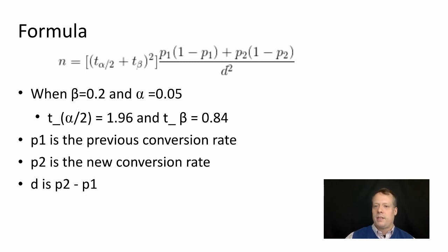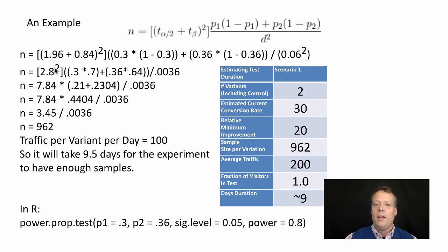Let's work this out in the example. We have (1.96 plus 0.84) squared, which is 2.8 squared, roughly 8. The variance of the first proportion is 0.3 times (1 minus 0.3), which is 0.21. The second is 0.36 times (1 minus 0.36), roughly 0.234. We take the difference we want to observe and square it: 0.06 squared is 0.0036. So we get 7.84 times 0.4404 divided by 0.0036, which is 3.45 divided by 0.0036, which equals 962.